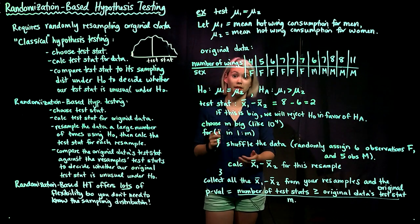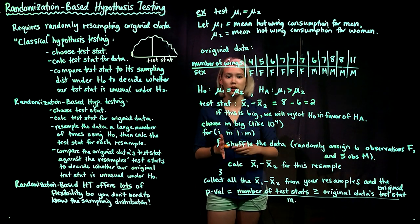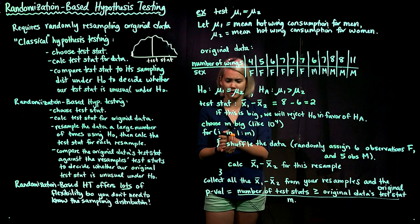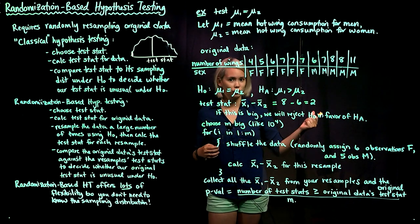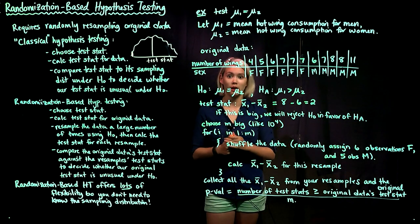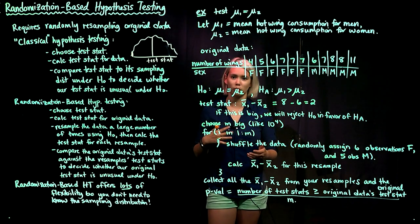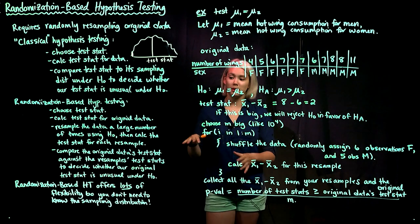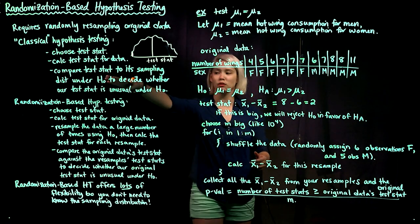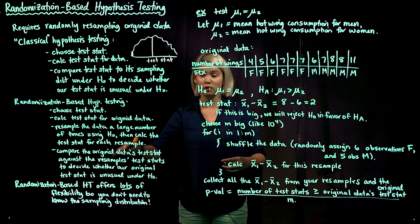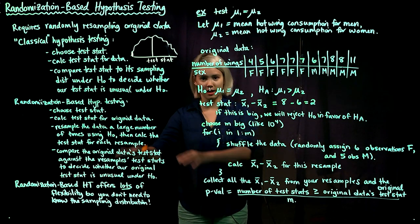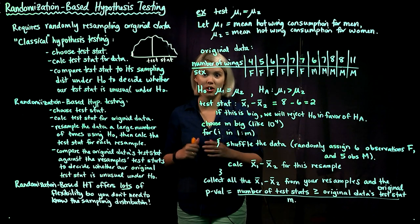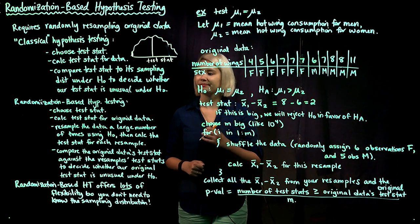The nice thing about randomization-based hypothesis testing is that it's super flexible. A lot of times in a real data analysis, you don't have an exact cookie-cutter method to use — you can't just do a two-sample t-test. Data in the real world is often more difficult, with complex dependencies you need to account for. You can choose your test statistic and use randomization-based hypothesis testing to get a p-value, using randomization instead of a known distribution.